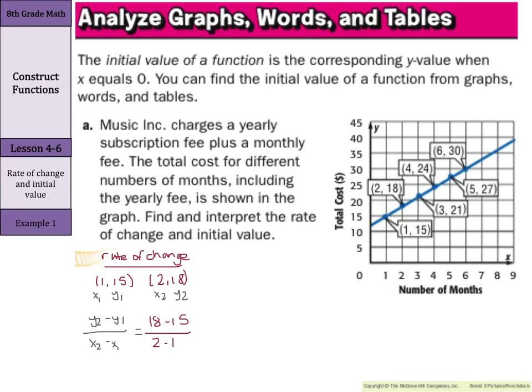18 minus 15 over 2 minus 1. We substitute in our 18 for y2, our 15 for y1, the 2 for x2, and the 1 for x1. Now we can simplify. 18 minus 15 is 3 and 2 minus 1 is 1, which leaves us a rate of change of 3.